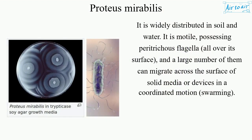It is widely distributed in soil and water. It is motile, possessing peritrichous flagella all over its surface, and a large number of them can migrate across the surface of solid media or devices in a coordinated motion — swarming.